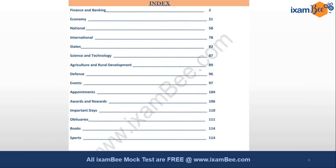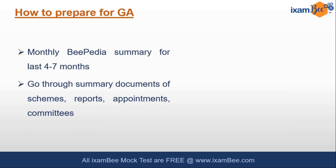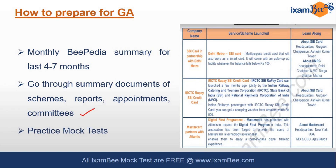Once you click on a month, you'll be taken to a page with various topics. Be very selective since you don't have much time. Cover topics like finance, banking, economy, books, awards, and appointments — these are the important ones. You can skip topics like science, technology, agriculture, and rural development. Also go through the summary document of schemes, reports, appointments, and committees. In the monthly BPedia you'll find a 'Learn Along' column with extra information such as headquarters, MD, CEO, and chairperson details. Practice mock tests as well — they help you judge your knowledge level, and reviewing correct answers enhances your preparation.